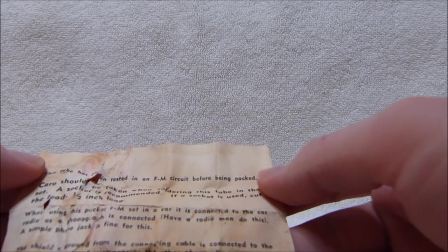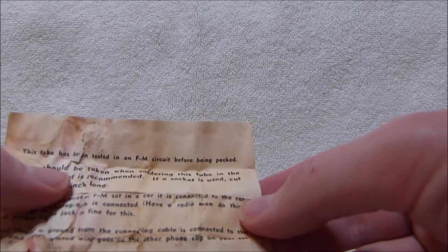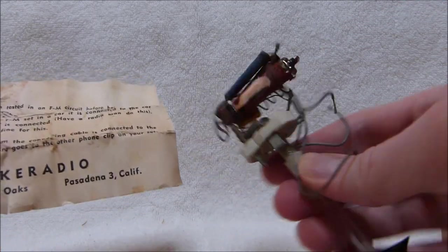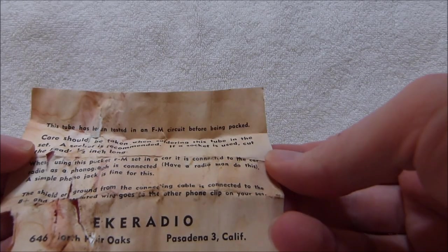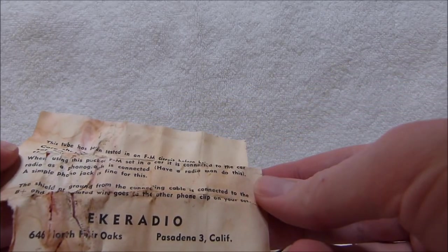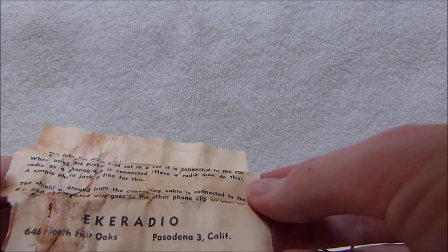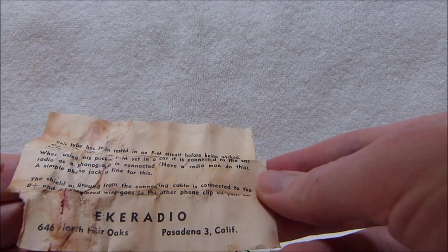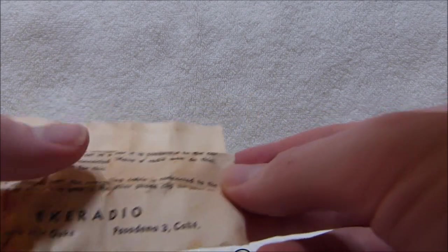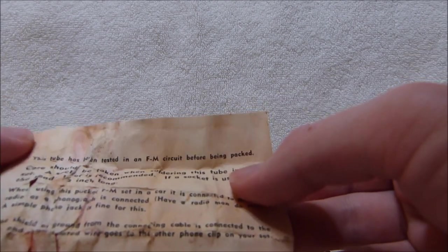This tube has been tested in an FM circuit before being packed. Care should be taken while soldering this tube in the set. A socket is recommended. It is, in fact, in a socket already. When using this pocket FM set in a car, it's connected to the car radio as the phonograph is connected. Have a radio man do this. A simple phono jack is fine for this. The shield of the ground from the connecting cable is connected to the B+. And the insulated wire goes to the other phone clip on your set. I'll probably preserve this with packing tape or something.